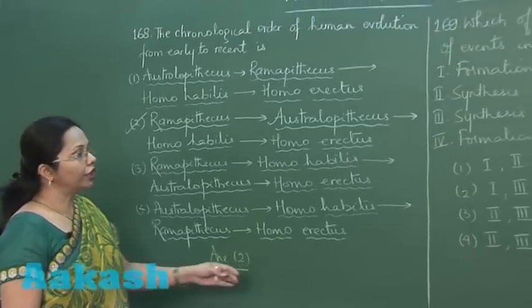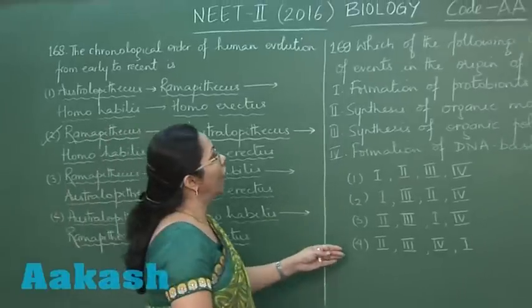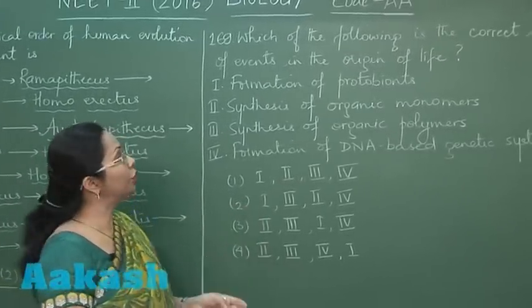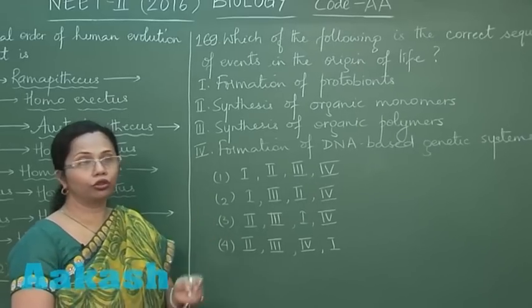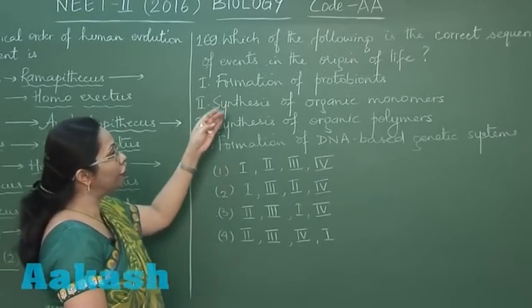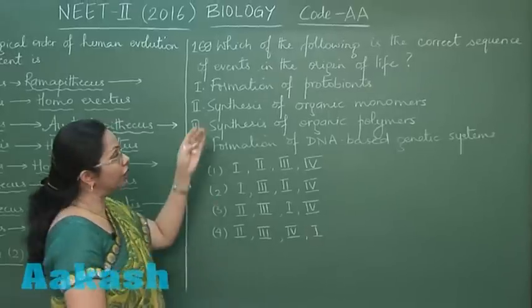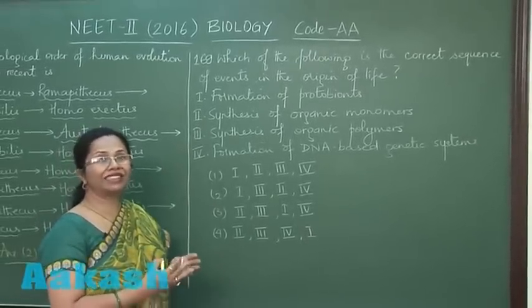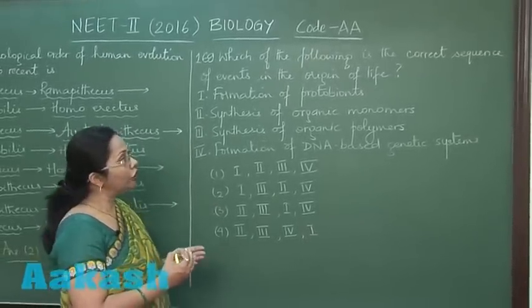Now moving on to the next question, 169. This is again a question from evolution where we have to select the correct sequence of the events during the origin of life. The four sequences are given: formation of protobionts. Protobionts were cell-like structures which did not have nucleotides still in them.